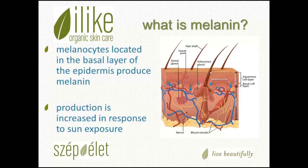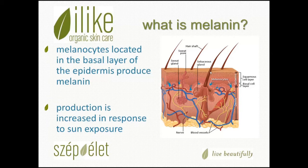Melanin can be found in several areas of the human body, including skin — where it provides our skin color — hair, and in the pupils and irises of our eyes. It's traditionally believed that skin pigmentation is the most important photoprotective factor, since melanin, besides functioning as a broadband UV absorbent, has antioxidant and radical scavenging properties.